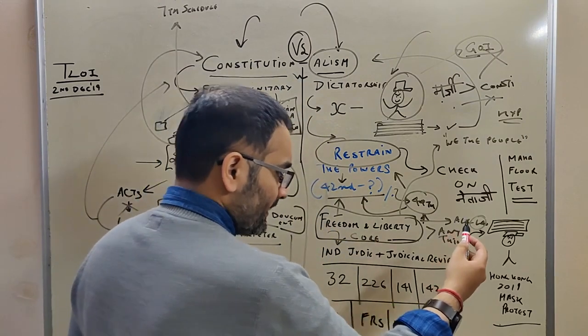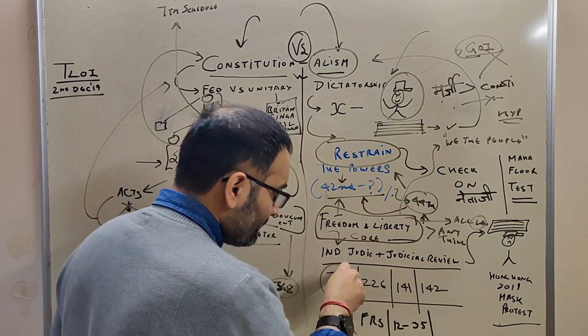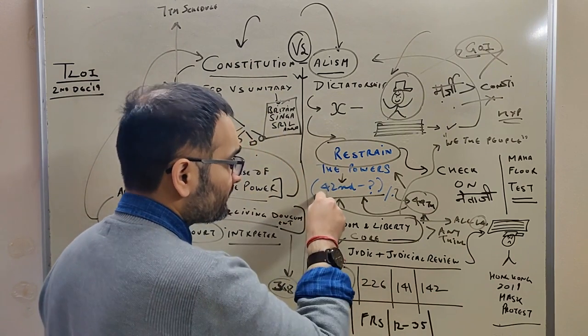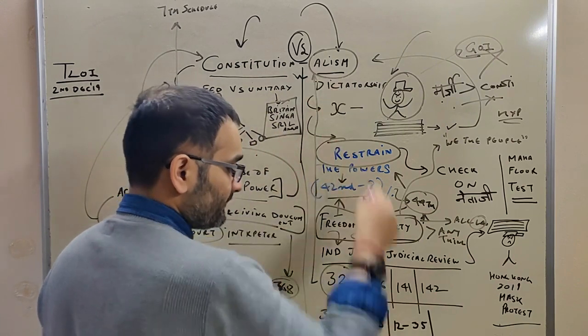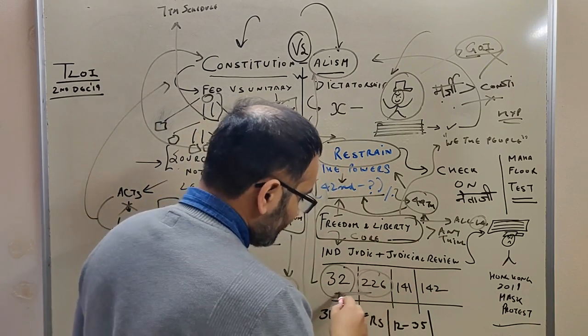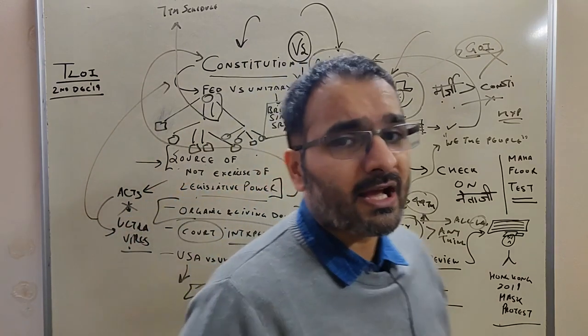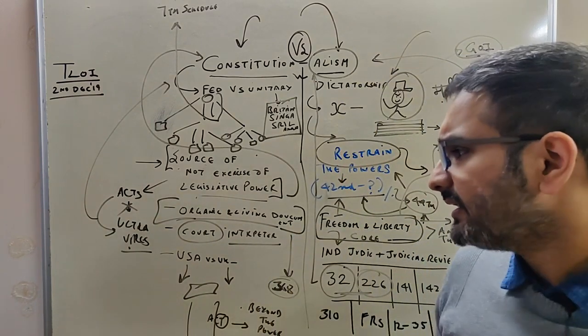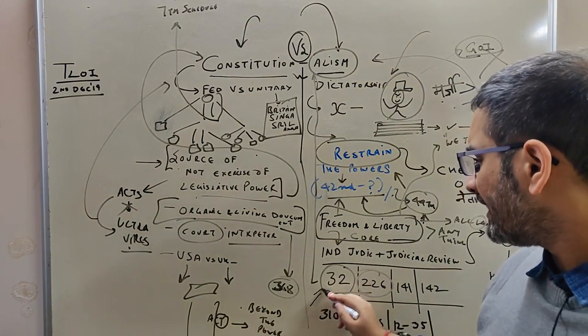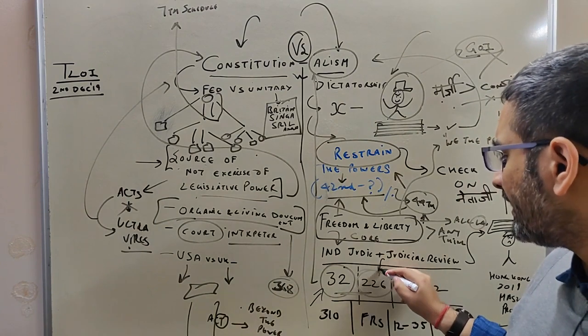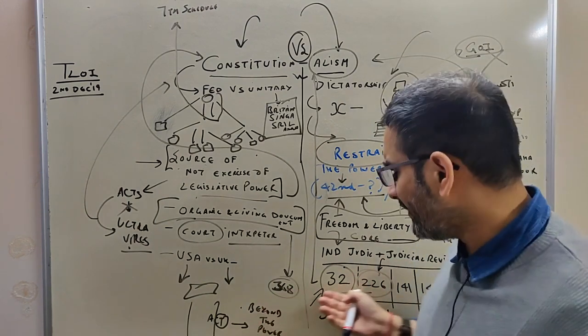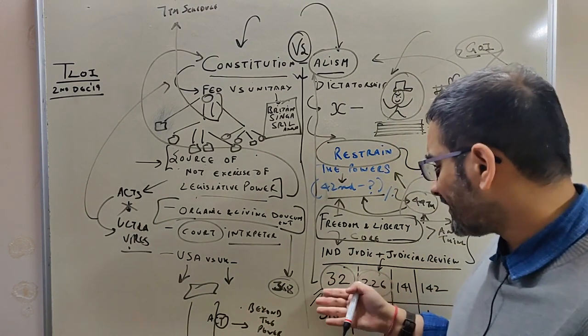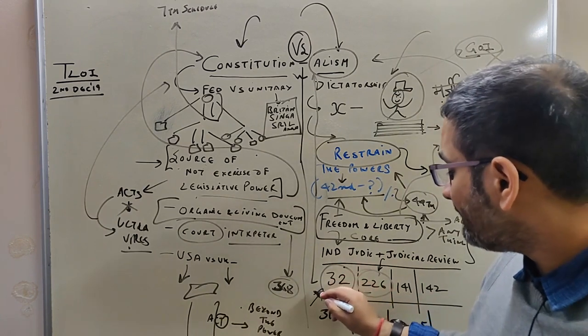Then we come to the most important articles that you are going to mention with constitutionalism: 32 and 226. Why? When your fundamental rights are violated, what do you do? You go to court and bring a writ. This is a basic legal question. Writs are in 32, in 226. We're not going into too much detail everywhere, just giving an example. So we're going to mention this.